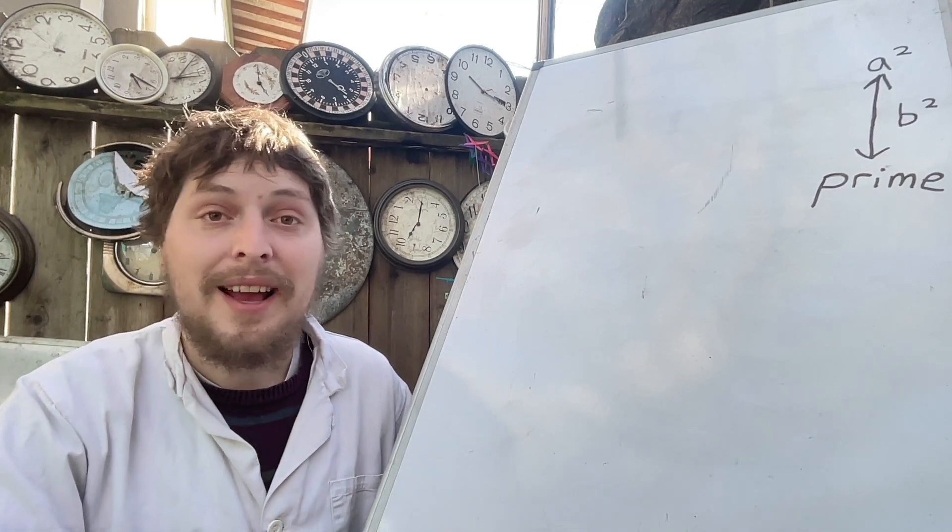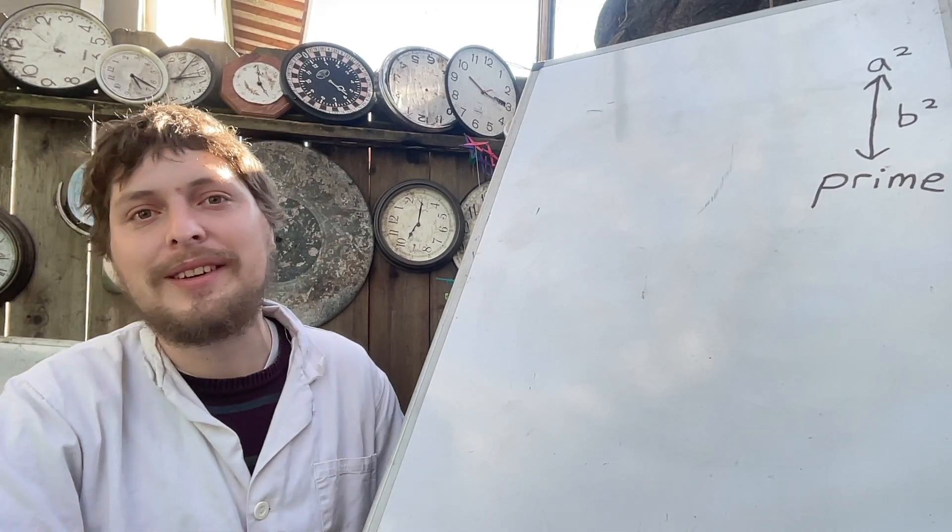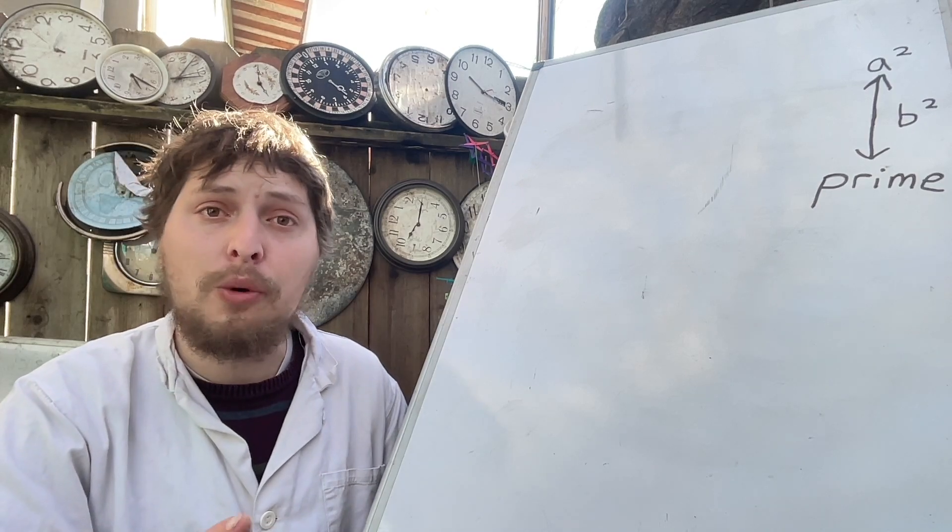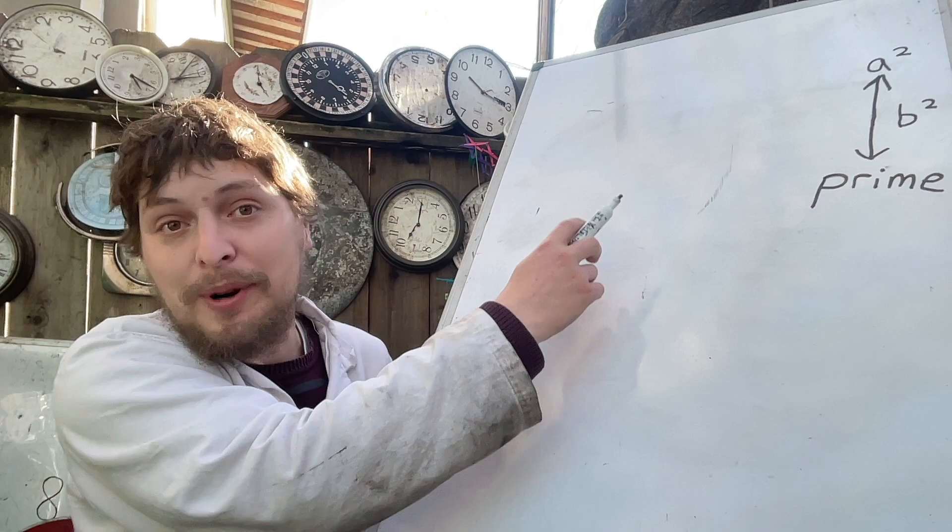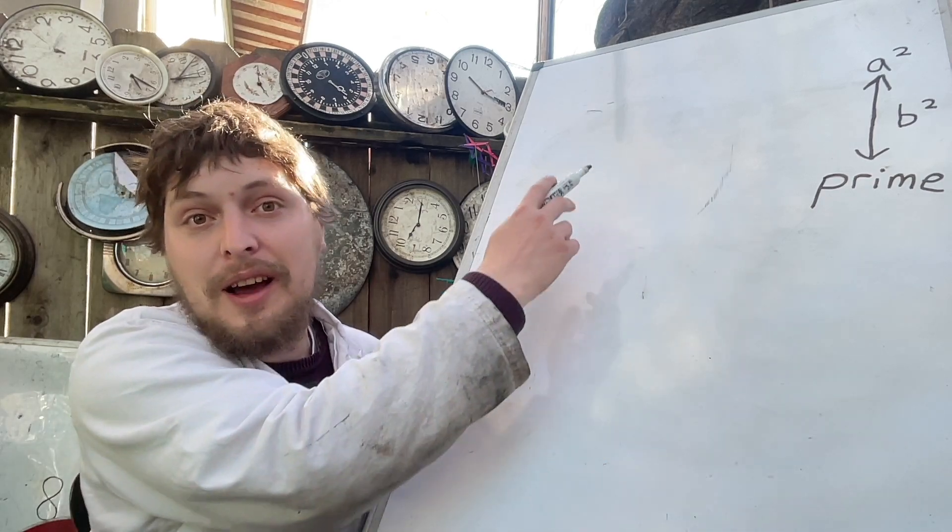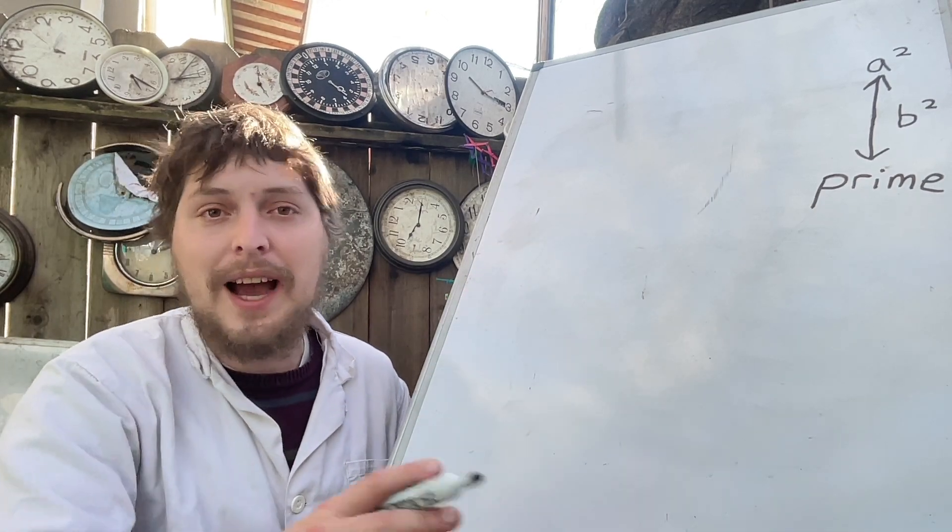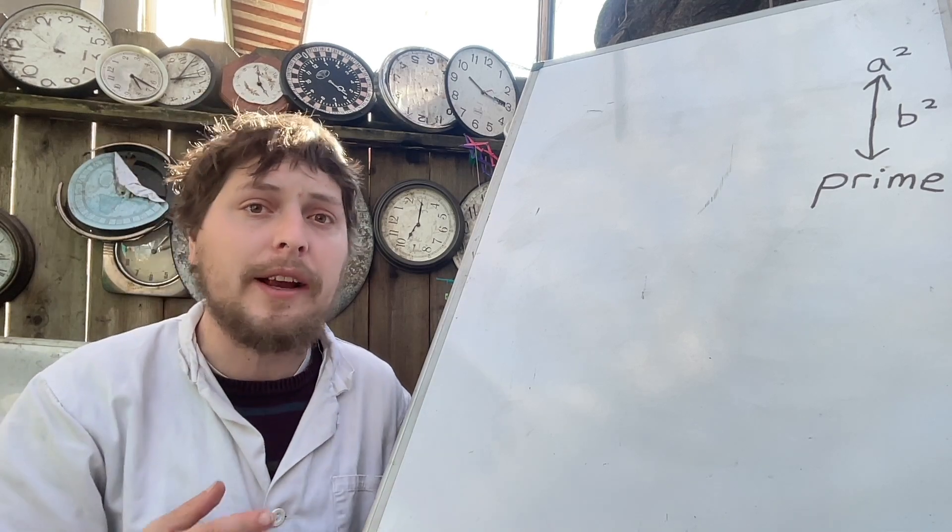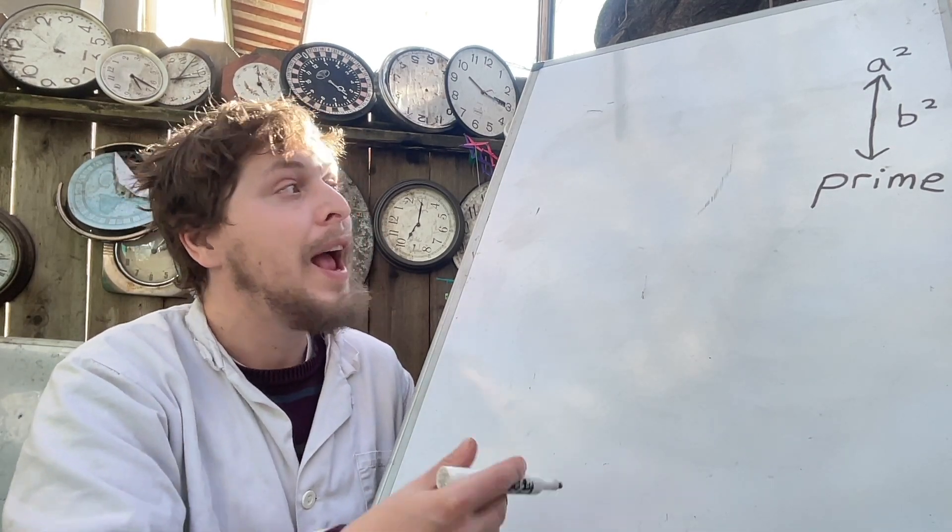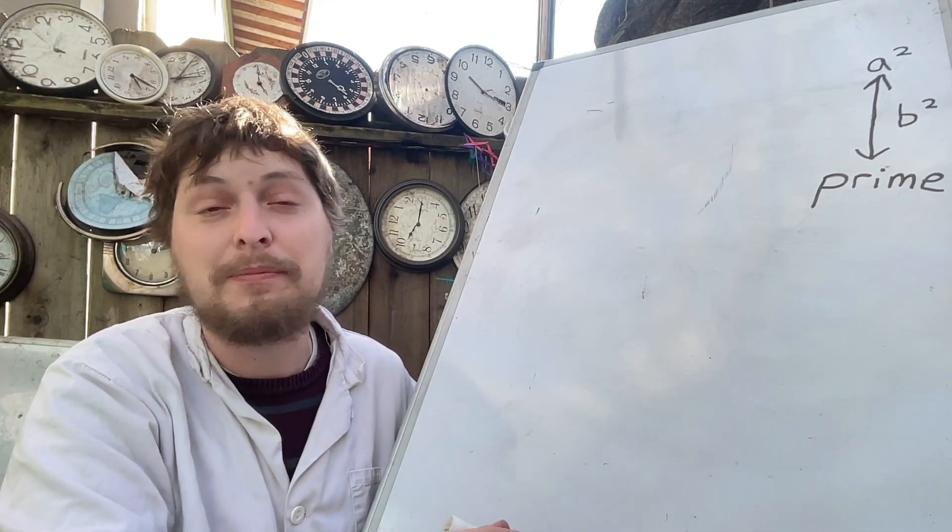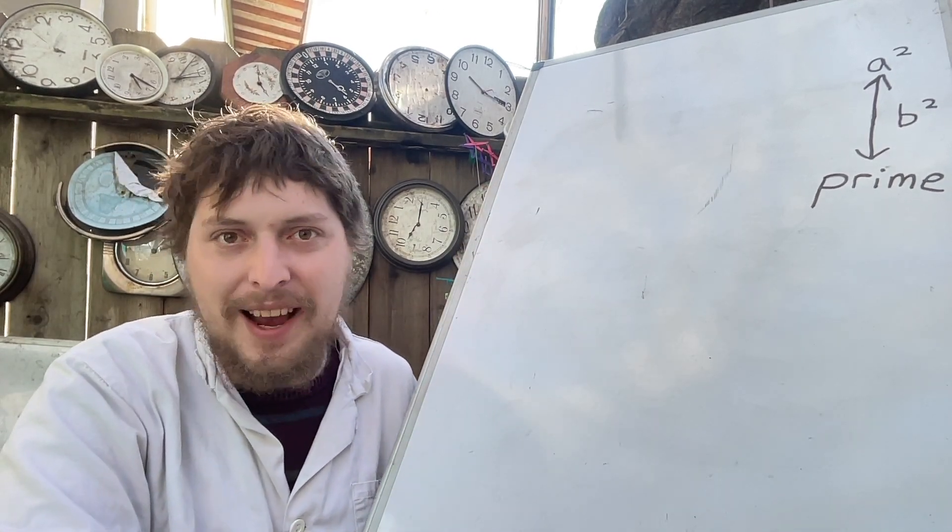Hey folks, I'm Demotro, and today I want to tell you about an interesting pattern within the question of which prime numbers can be a square number distance beneath another square number. And that question sort of has two layers. Which prime numbers is that possible for, and which square numbers make it possible in each case?